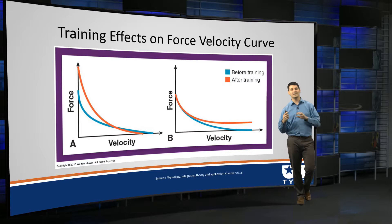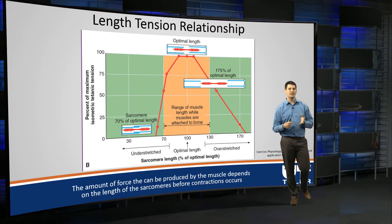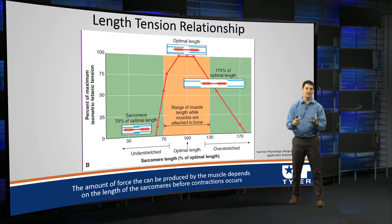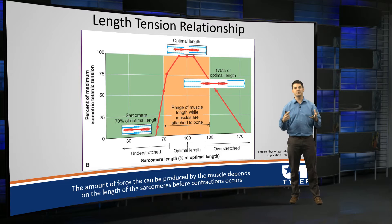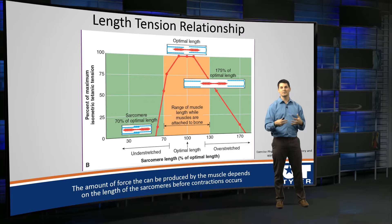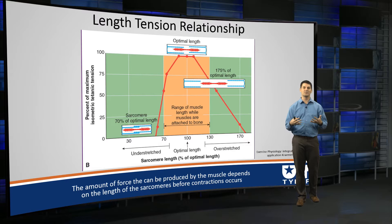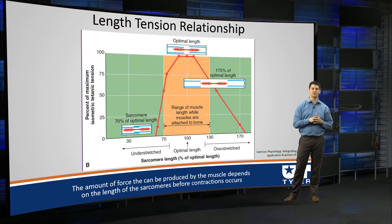Moving from the force-velocity curve now into the length-tension relationship — another extremely classic look at exercise physiology for understanding how a muscle works. We develop force by understanding the number of cross-bridge formations which can be made to move the sarcomeres. One of the main determinants of how many actin and myosin cross-bridges can work together is the arrangement of those cross-bridges right before an exercise starts. We'll look at three different points on the curve.